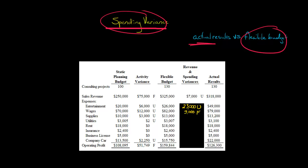For supplies, we actually incurred $13,200 of supplies expense, but it should have been $13,000 — so that's a $200 unfavorable spending variance. For utilities, we had $3,100 actual and it should have been $3,007, giving us a $93 unfavorable spending variance.